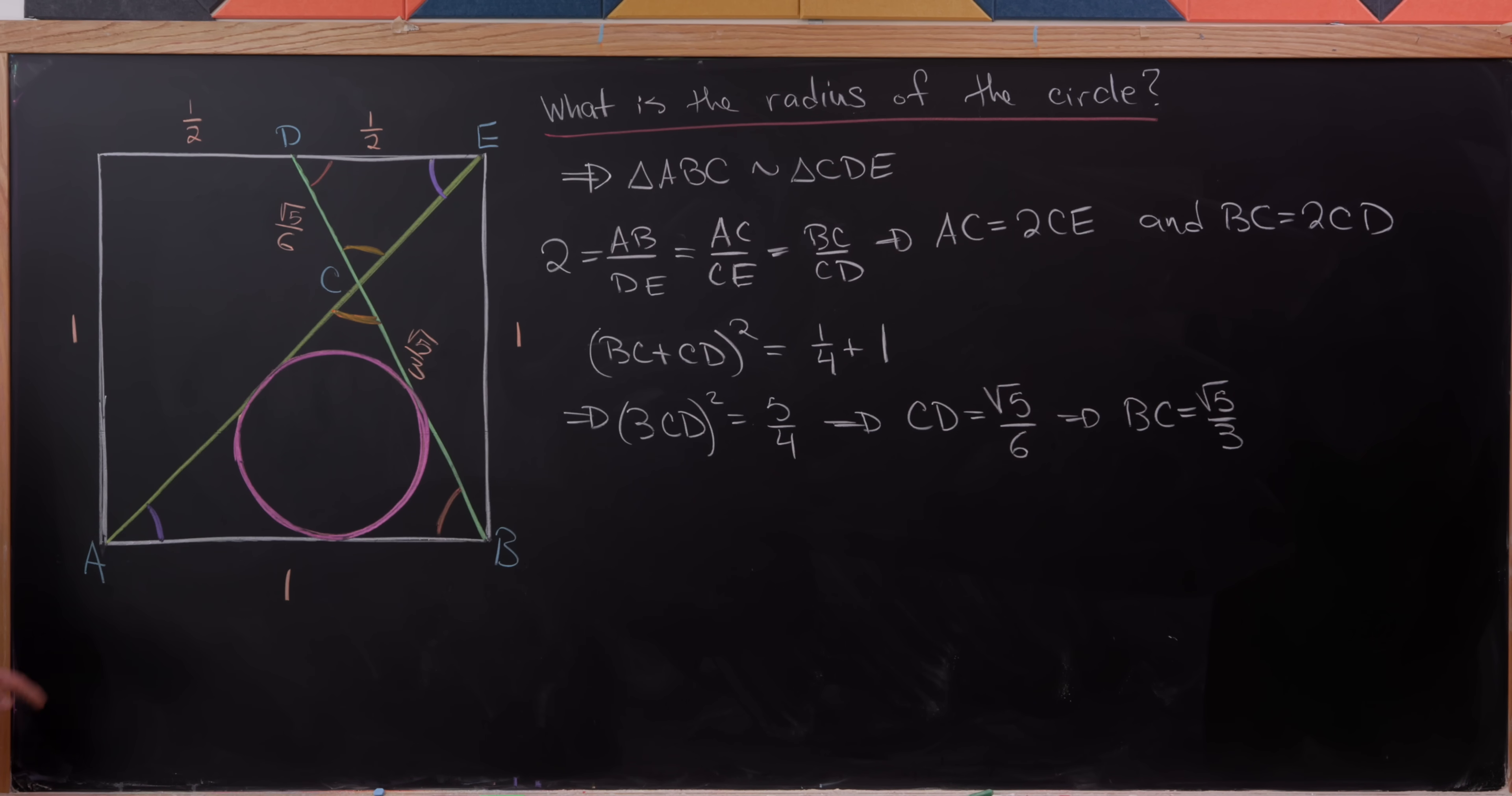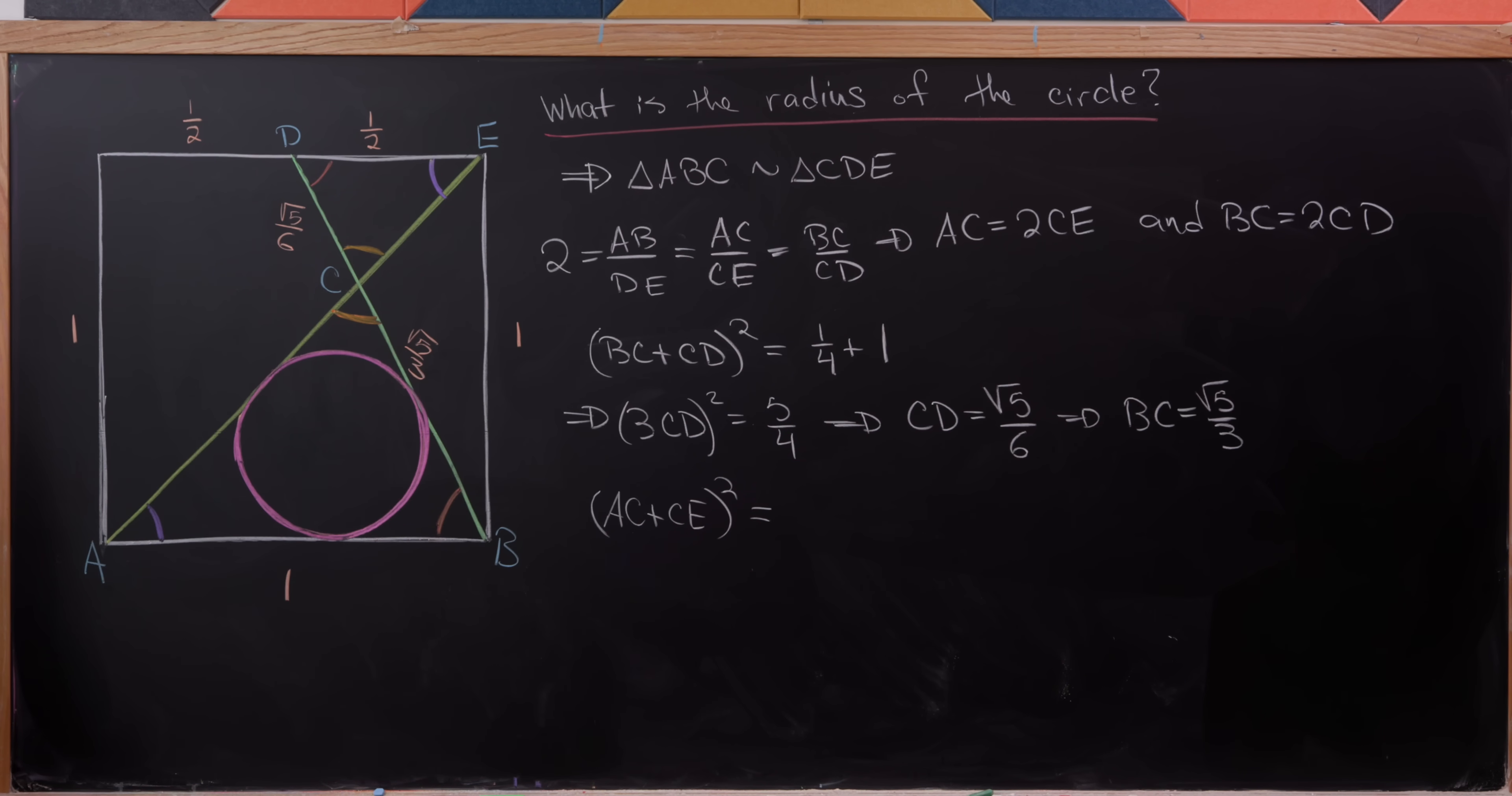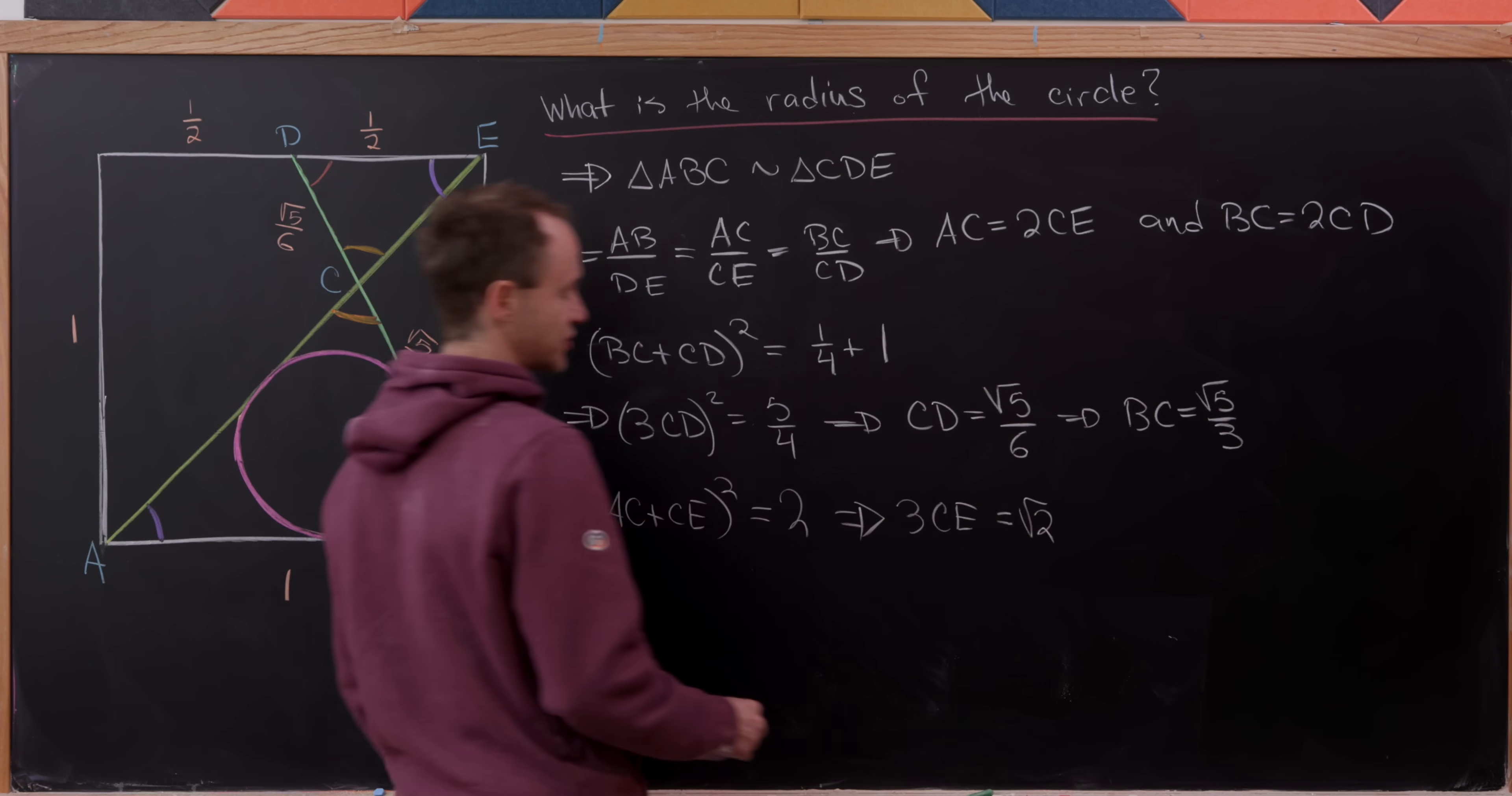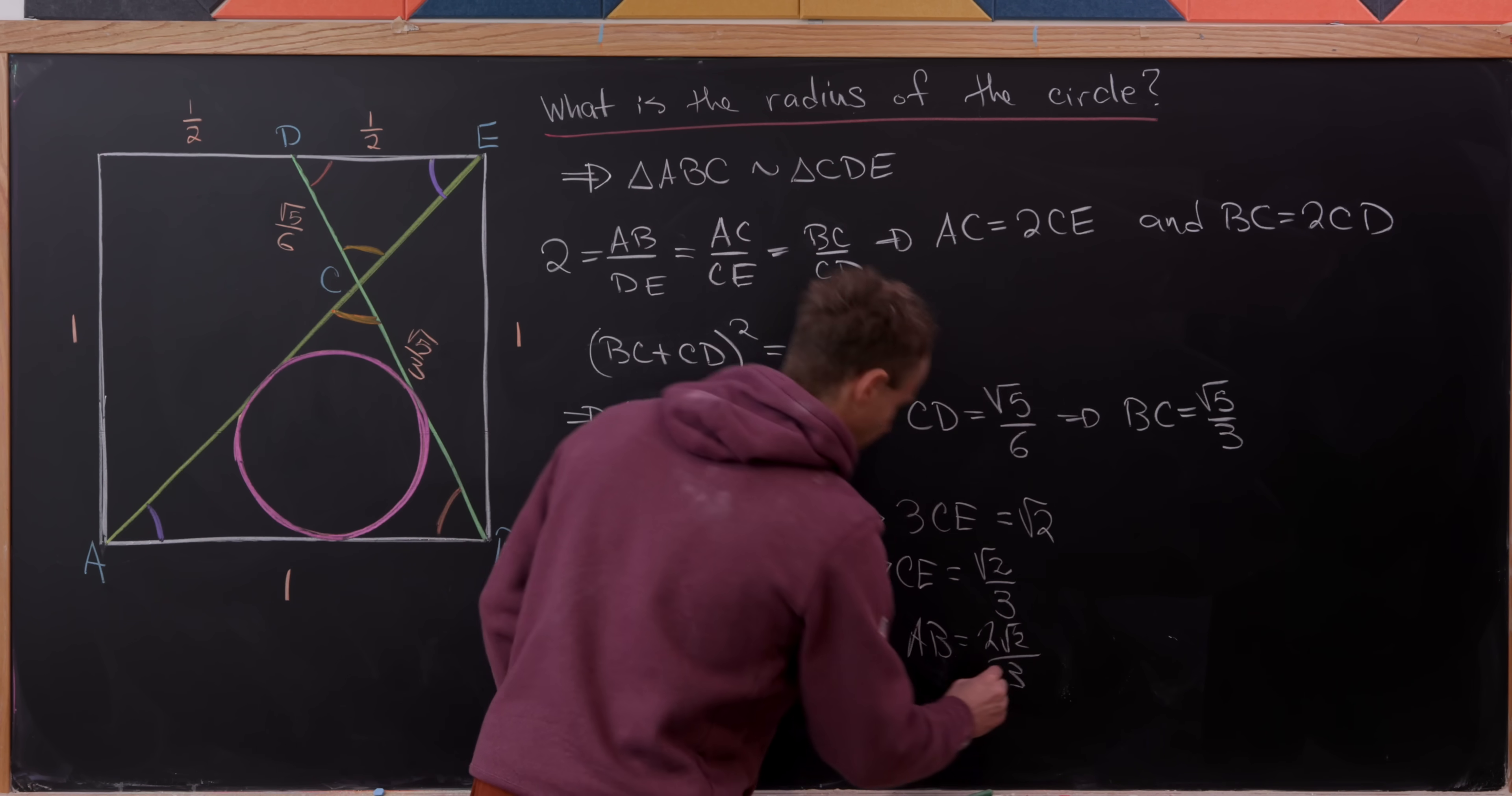So now we're going to play the same game with this right triangle, ABE. So the hypotenuse is given by AC plus CE. So we'll square that. And squaring that, we'll have the sum of the squares of the sides. But that's simply 1 squared plus 1 squared. In other words, it's equal to 2. But now AC plus CE, using this formula, is 3 times CE. So we have 3 times CE is equal to the square root of 2. In other words, we have CE is equal to the square root of 2 over 3. And thus, AC is equal to 2 root of 2 over 3.